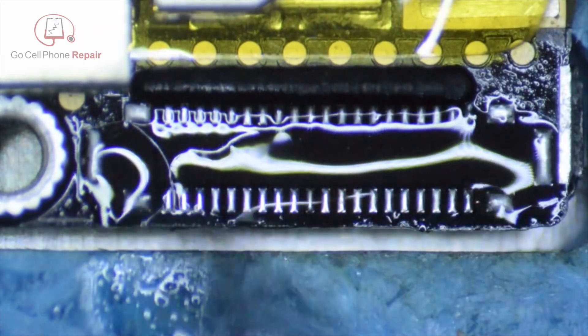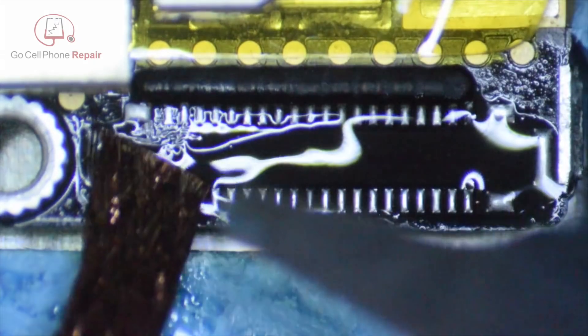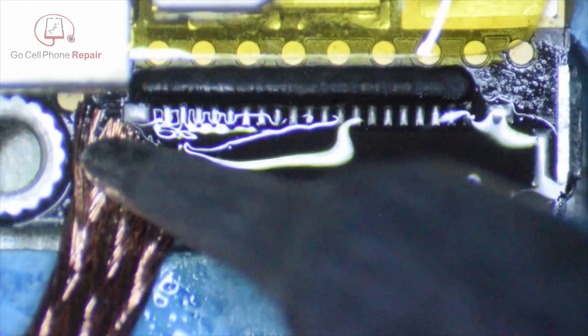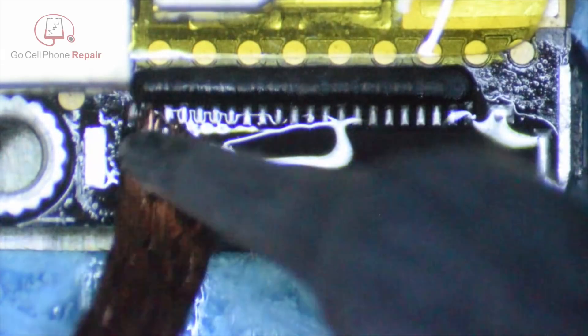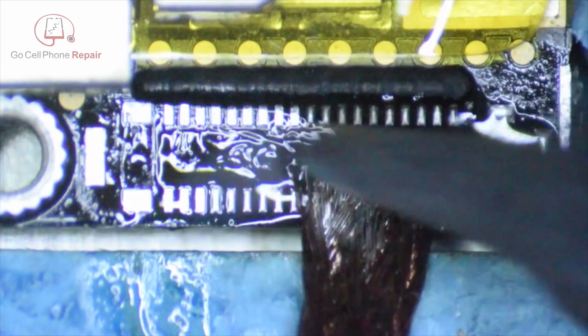We'll put a tiny bit more flux on here because that stuff does tend to boil away as you work with it. Grab our wick, and we'll clean off not just the connectors themselves, but on the left and right-hand side where we have the points that actually anchor the connector to the board.